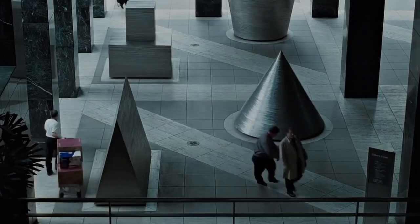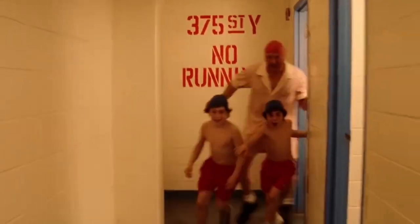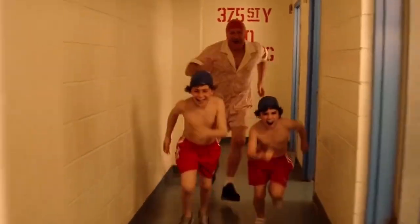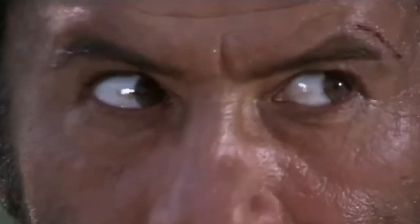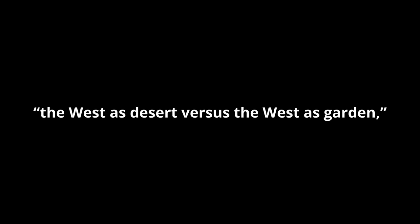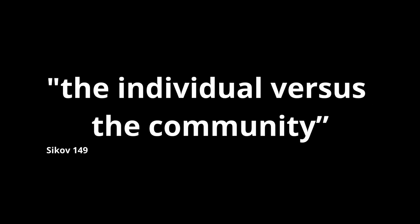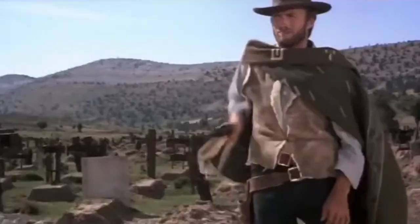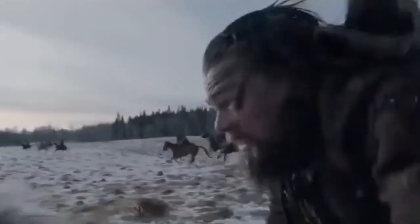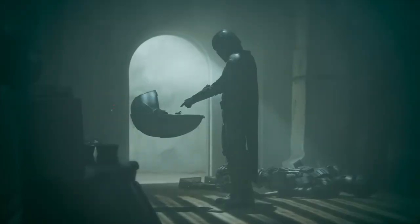That's a bit abstract. The example we get from Sikov and Altman and yet another film theorist, Jim Kitses, puts out a few tensions central to the western genre to make this a bit more concrete. A western is about the west as desert versus the west as garden, and nature versus culture, and the individual versus the community. In other words, a movie is a western if it addresses some of these central tensions or dilemmas. It need not even be set in the American west to fall into this category.